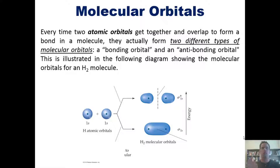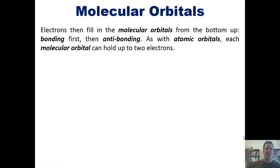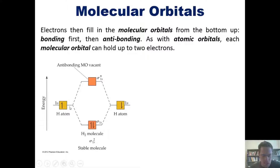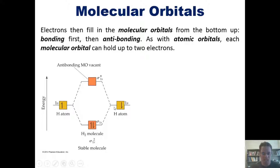Once you have your individual bonding and anti-bonding orbitals formed, electrons fill them up starting at the bottom — the bonding orbital first, followed by the anti-bonding. As with atomic orbitals, each molecular orbital can hold up to two electrons. In this diagram, on the left and right we have individual hydrogen atoms with their individual 1s atomic orbitals. Each hydrogen atom brings one electron to the table.